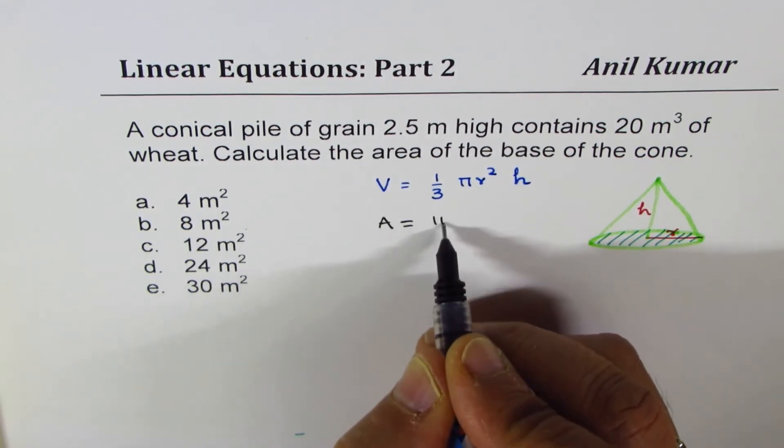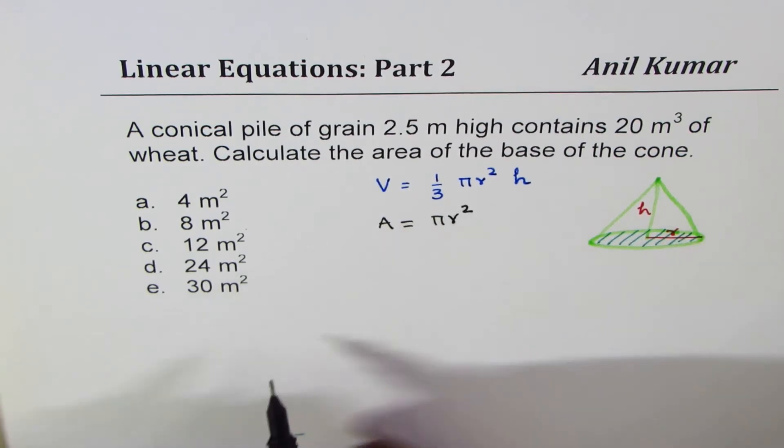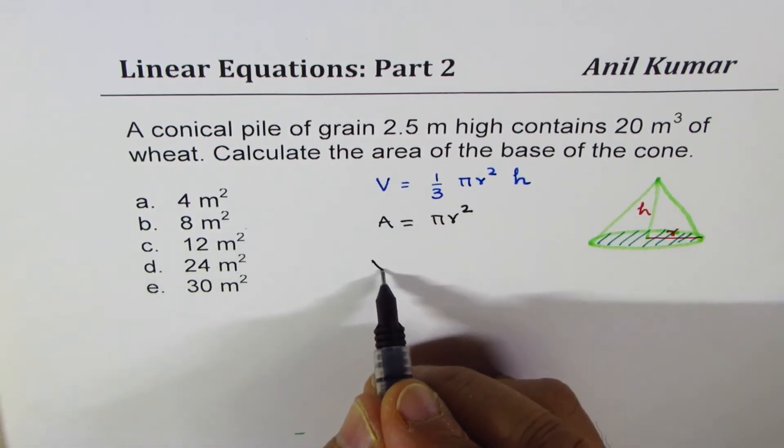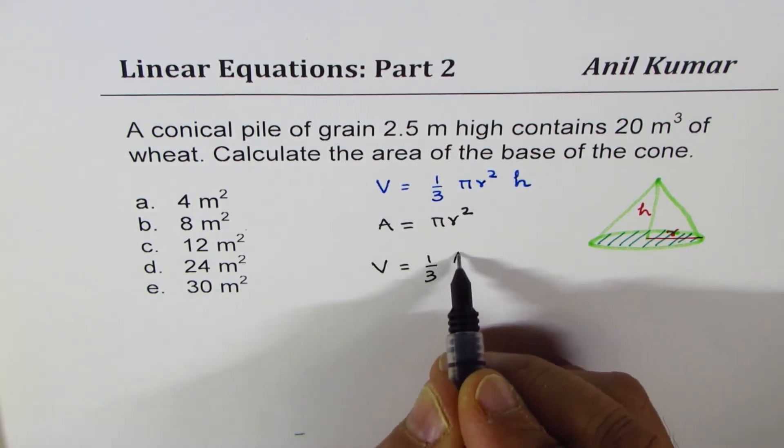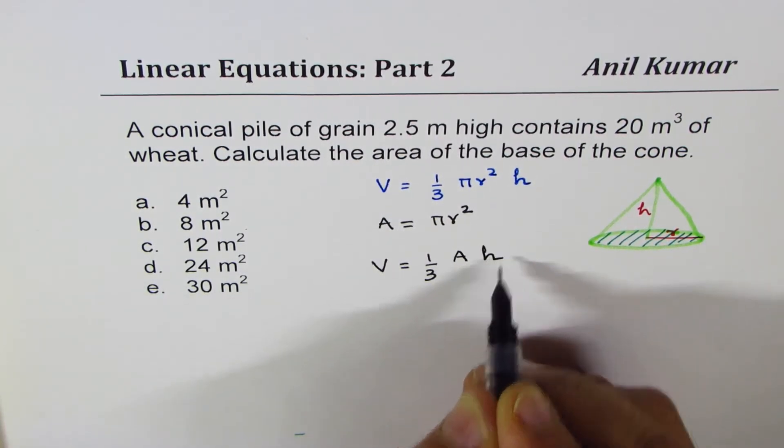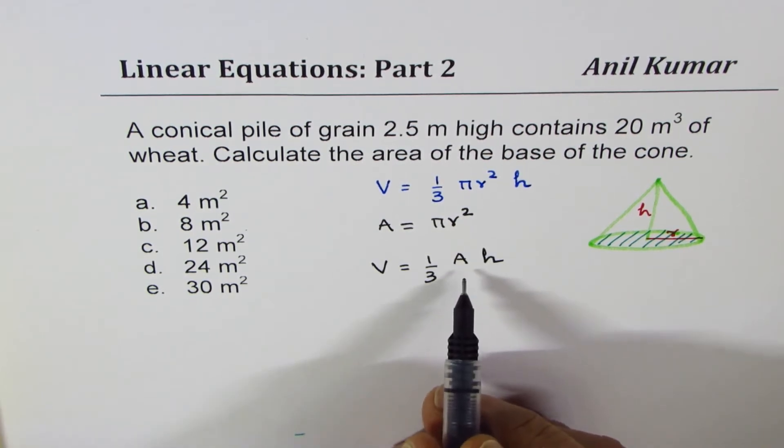Area of the base is πr². So we can rewrite this formula as V = (1/3) × A × h, where A is the area of the base. Now you see it as a linear equation.